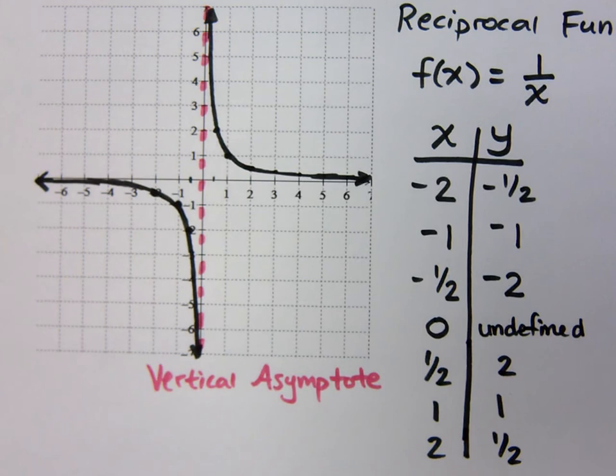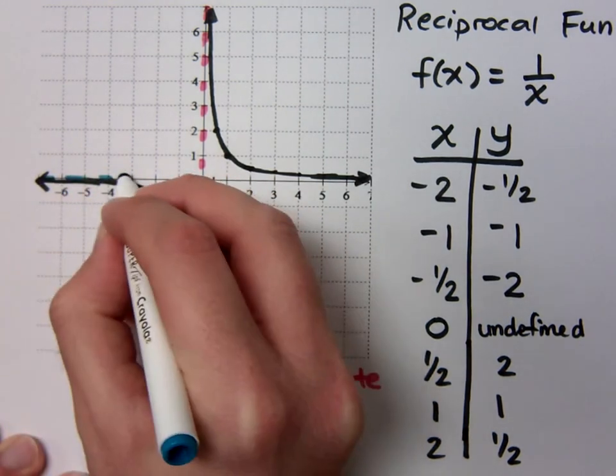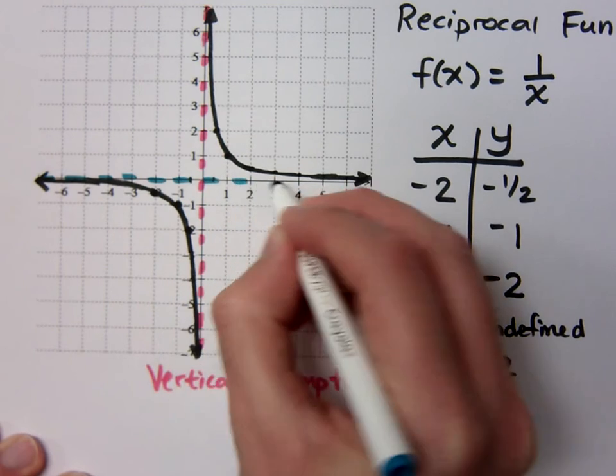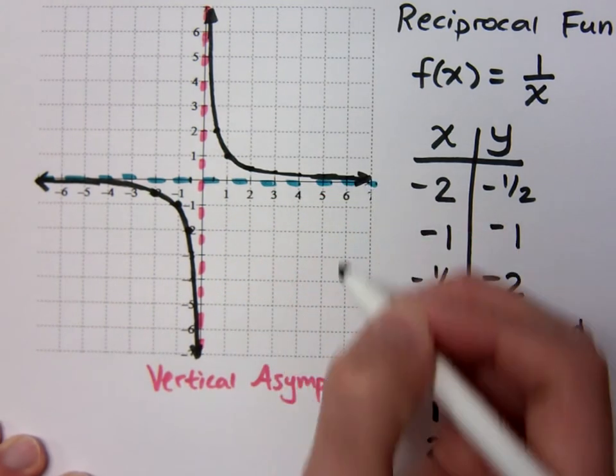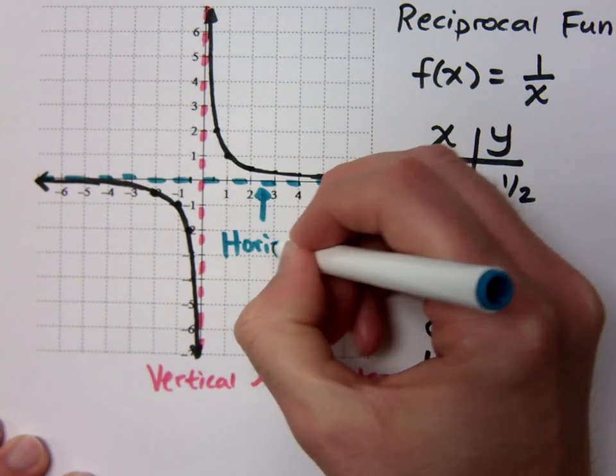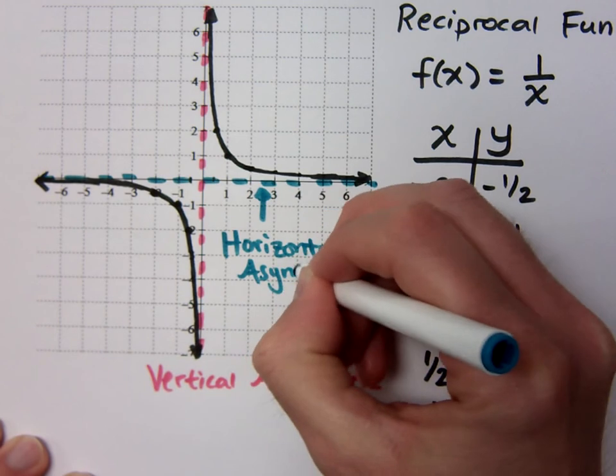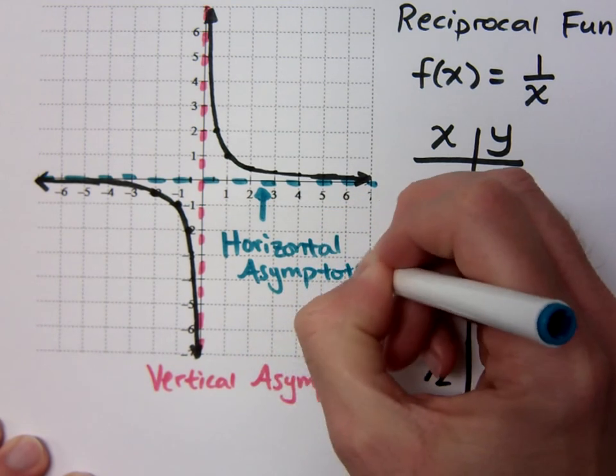There is something else that we have going on here. Now, we don't have this for every reciprocal function, but for the main guys, we do. And notice we say we get closer and closer to the x-axis, but we don't get to include it, right? We don't hit that. So this guy right here is called the horizontal asymptote. Okay.